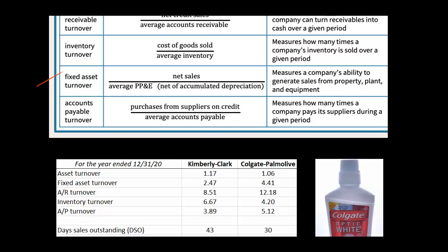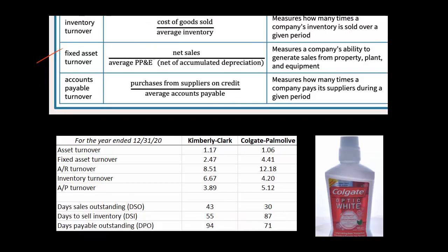Now let's get to working capital: receivables, inventory, and accounts payable. These are three of the most important ratios we'll calculate. It's very important for companies to collect receivables as quickly as possible and sell inventory as quickly as possible. When you look at Kimberly-Clark's accounts receivable turnover of 8.51, it might be hard to interpret, but you can take 365 and divide it by 8.51 to get 43 days — this is called days sales outstanding.